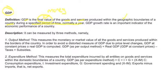GDP is calculated using 3 methods: output method, expenditure method, and income method. The output method measures the monetary or market value of goods and services produced within the borders of the country. In order to avoid a distorted measure of GDP due to price level changes, GDP at constant prices — or real GDP — is computed. That is what we use in the output method.